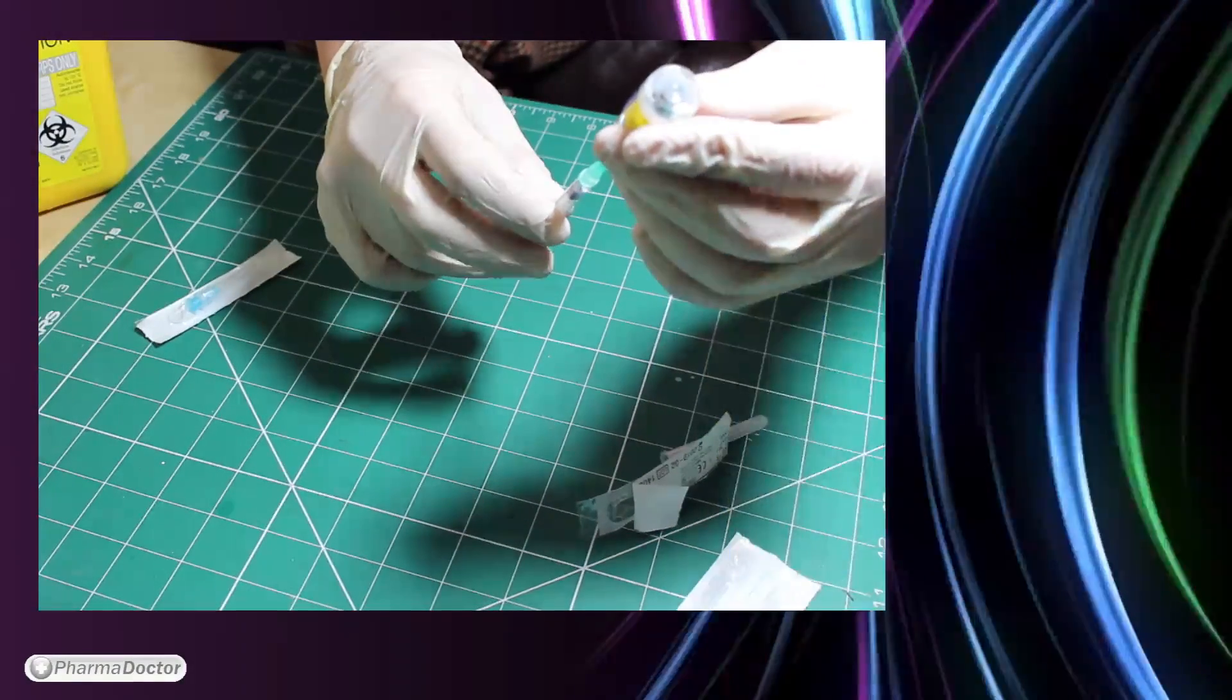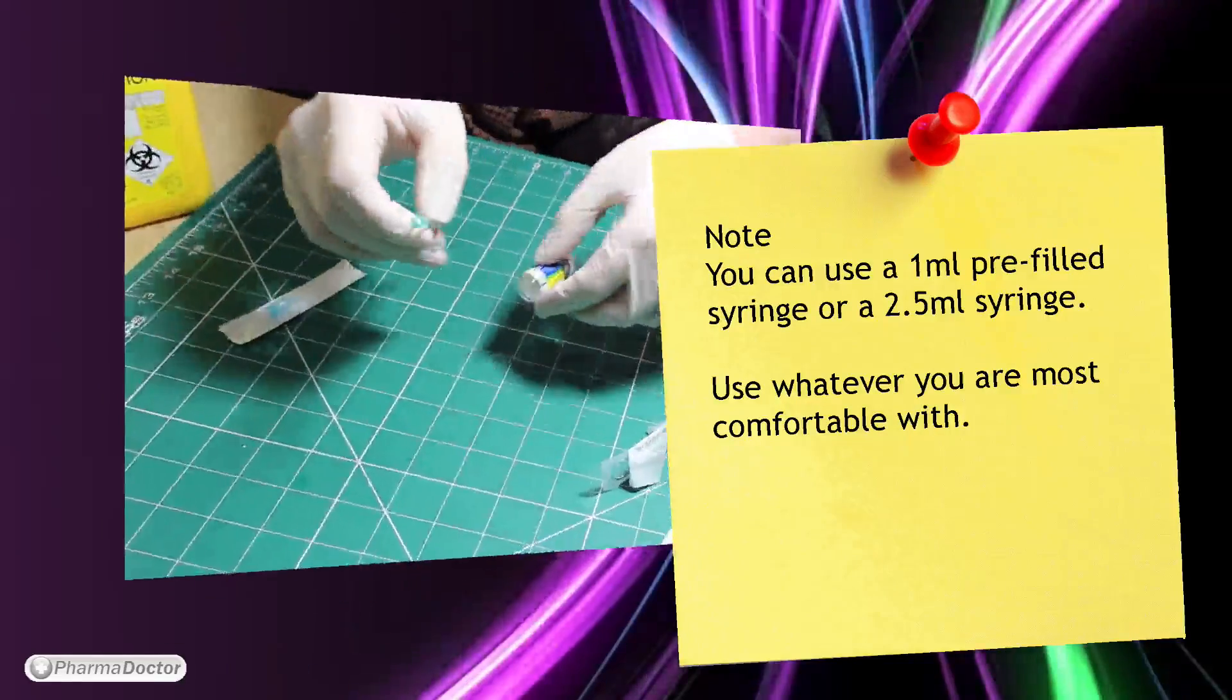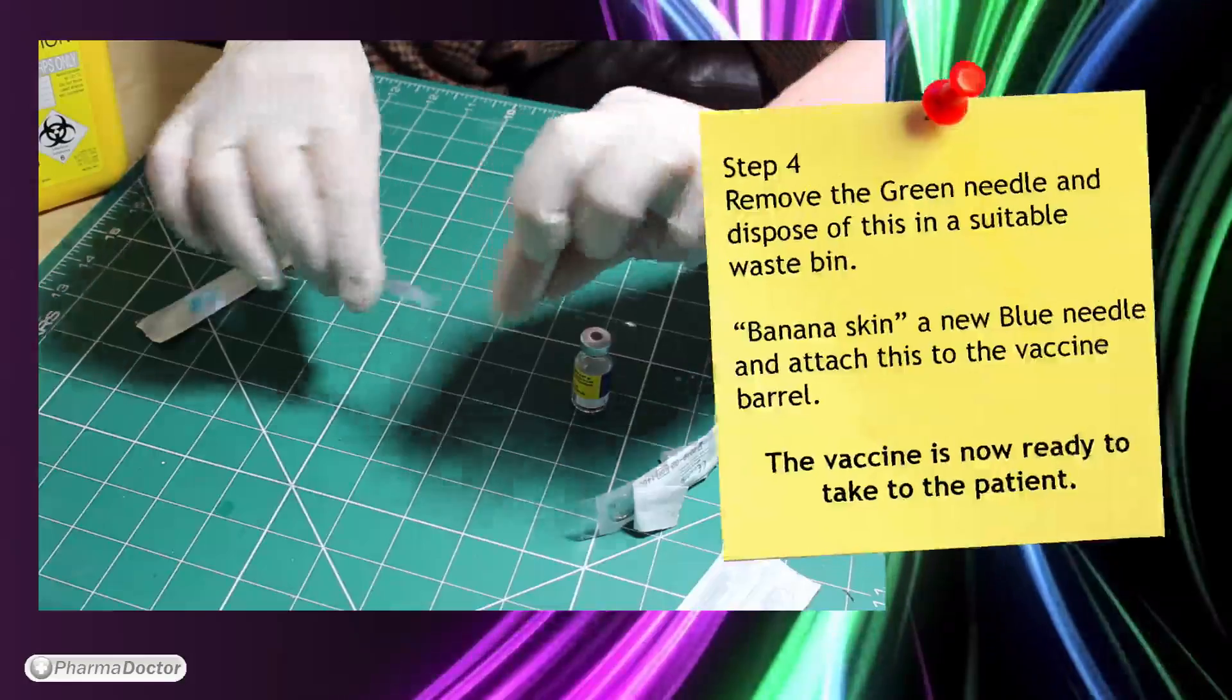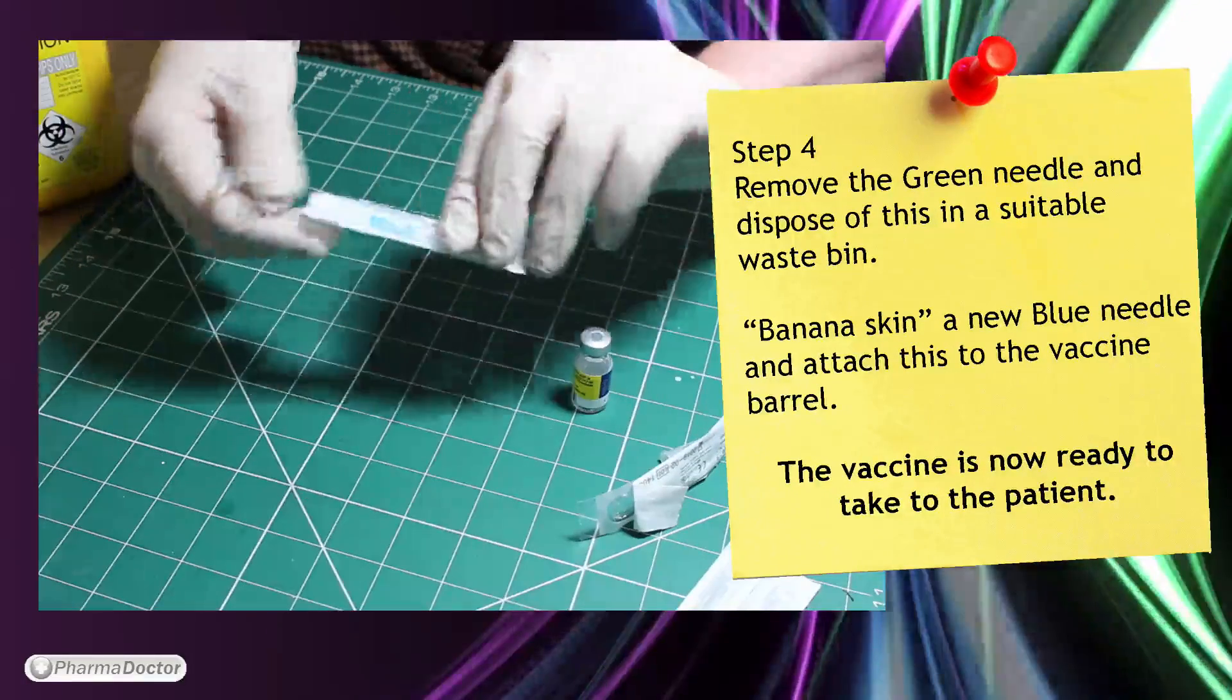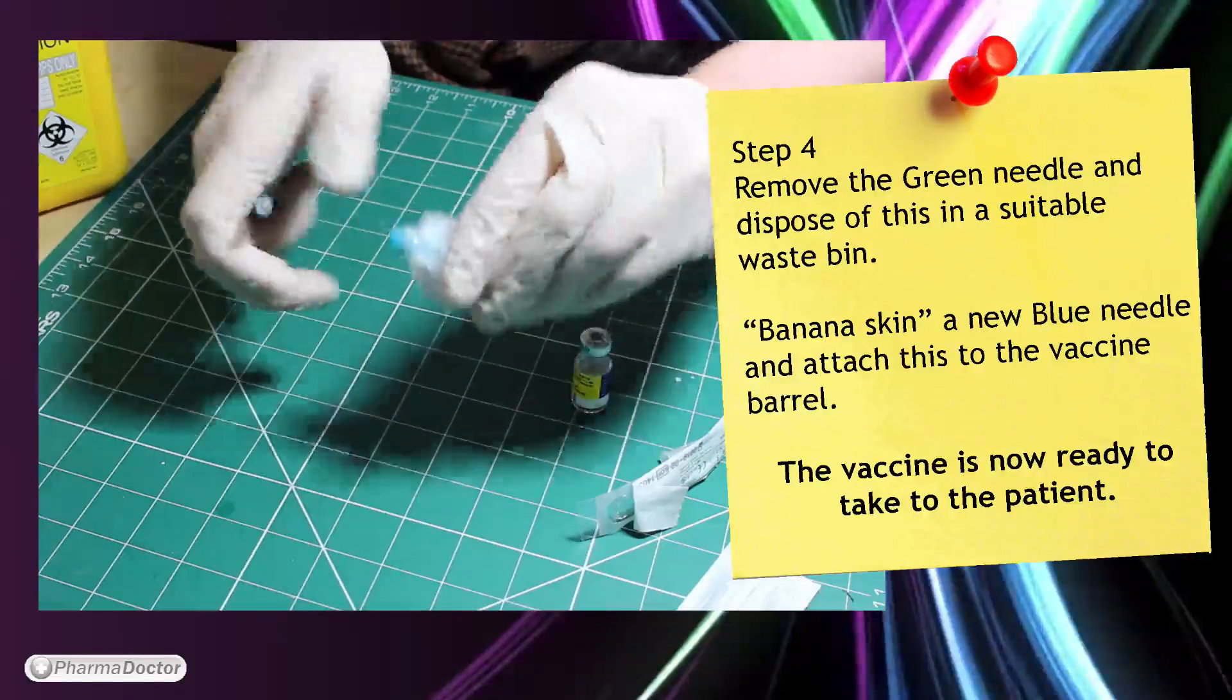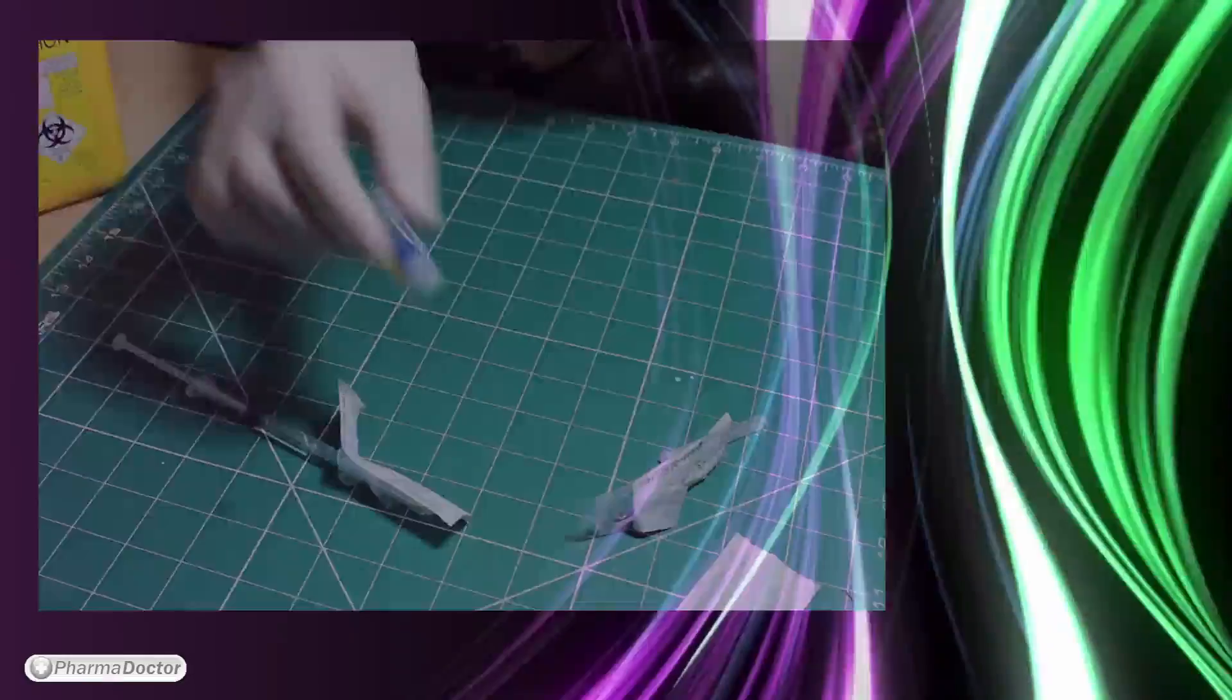Once all of the vaccine has been withdrawn from the vial into the vaccine barrel, remove the green needle and dispose of this in a suitable waste bin. Get your blue needle and banana skin the needle and attach it to the vaccine barrel itself. The vaccine is now ready to give to your patient.